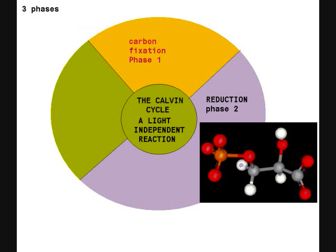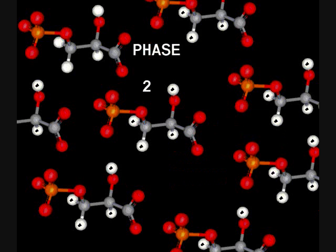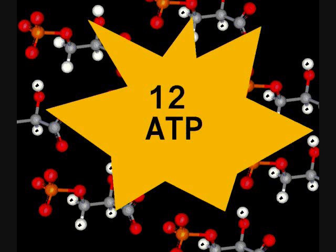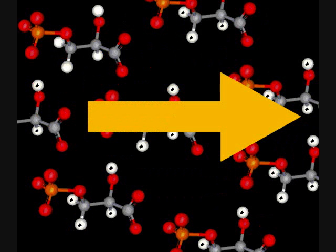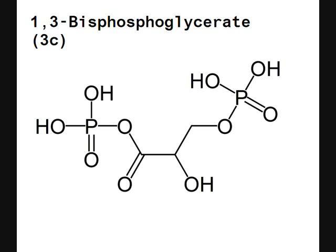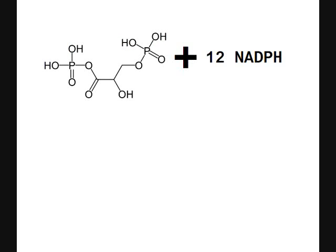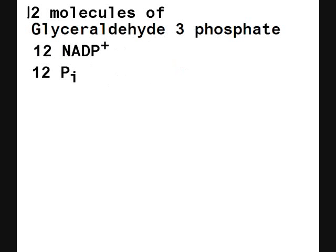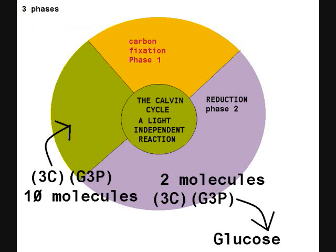The 12 molecules of 3-phosphoglycerate enter Phase 2. The 3-phosphoglycerate reacts with 12 ATP to form 12 ADP and 12 molecules of 1,3-biphosphoglycerate. These 12 molecules of 1,3-biphosphoglycerate then react with 12 NADPH to form 12 molecules of glyceraldehyde 3-phosphate, 12 NADP+ ions, and 12 phosphate ions.